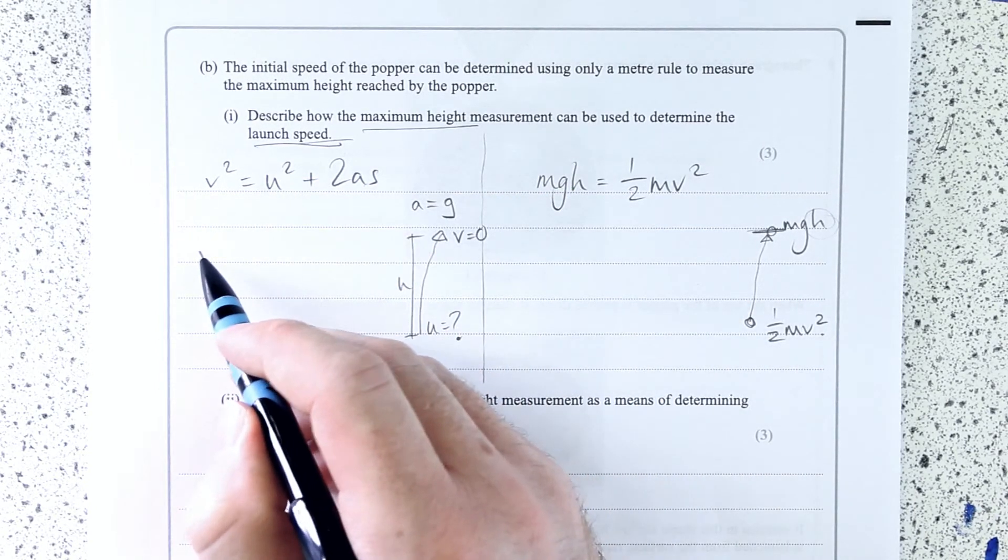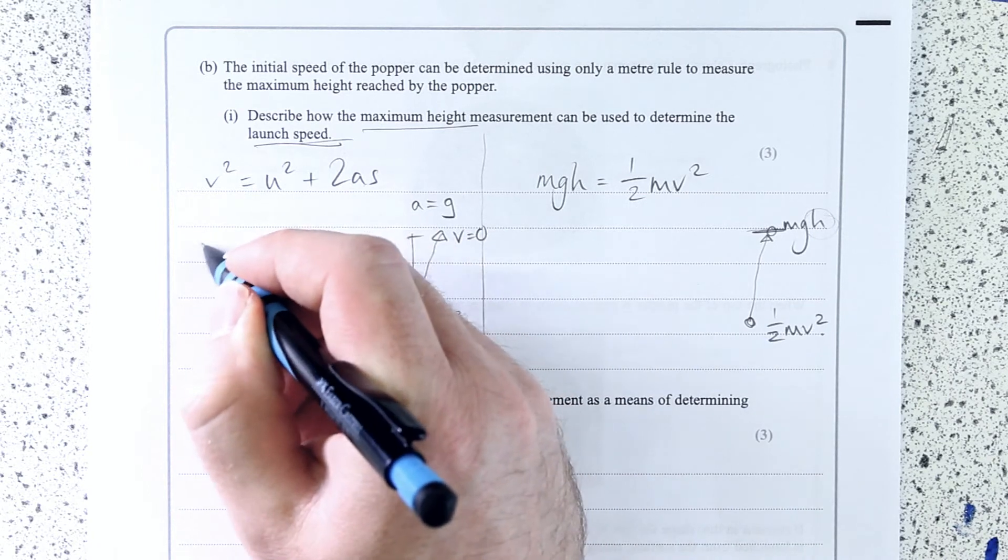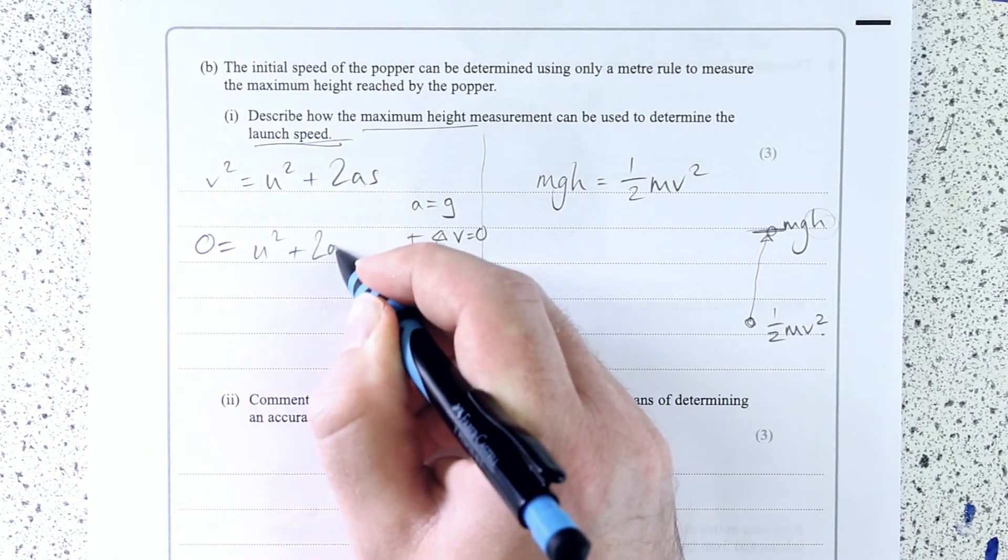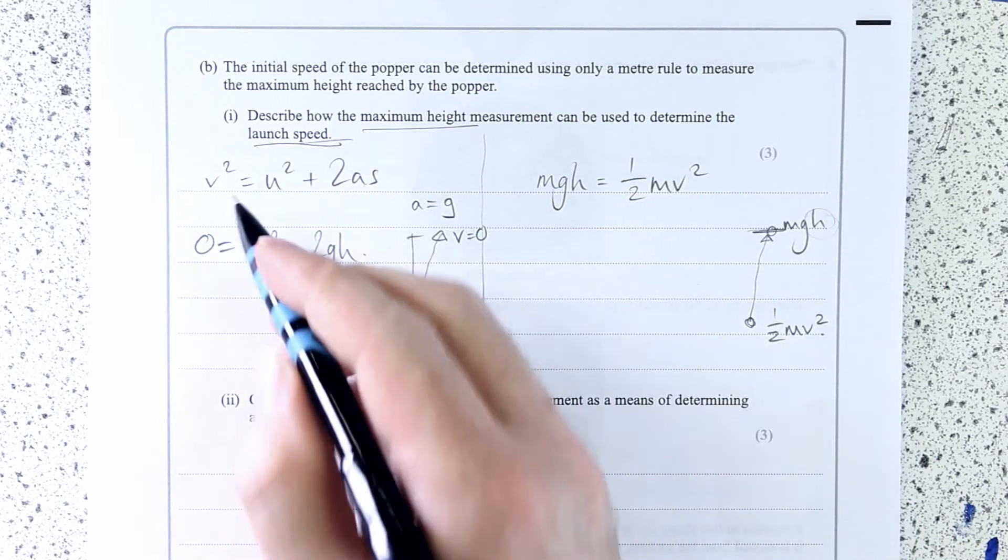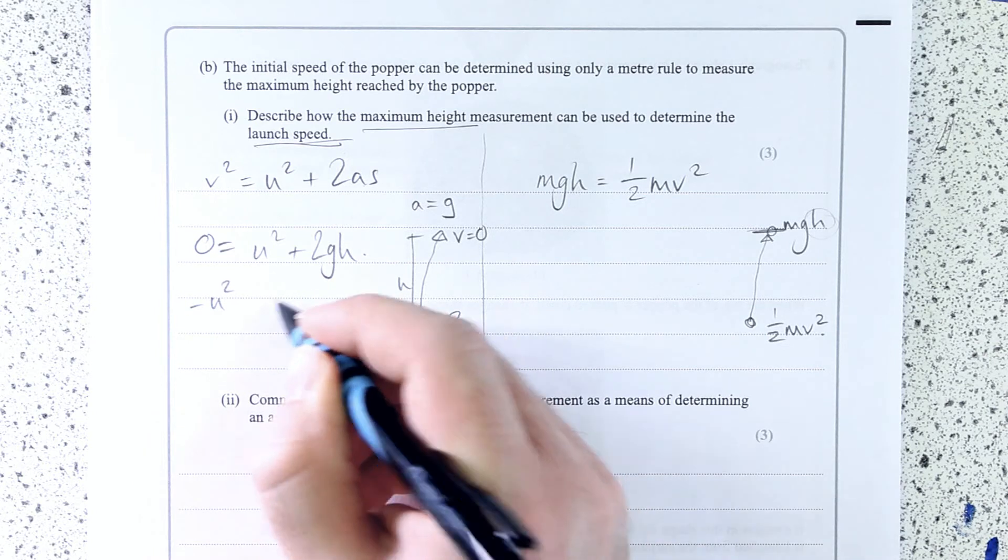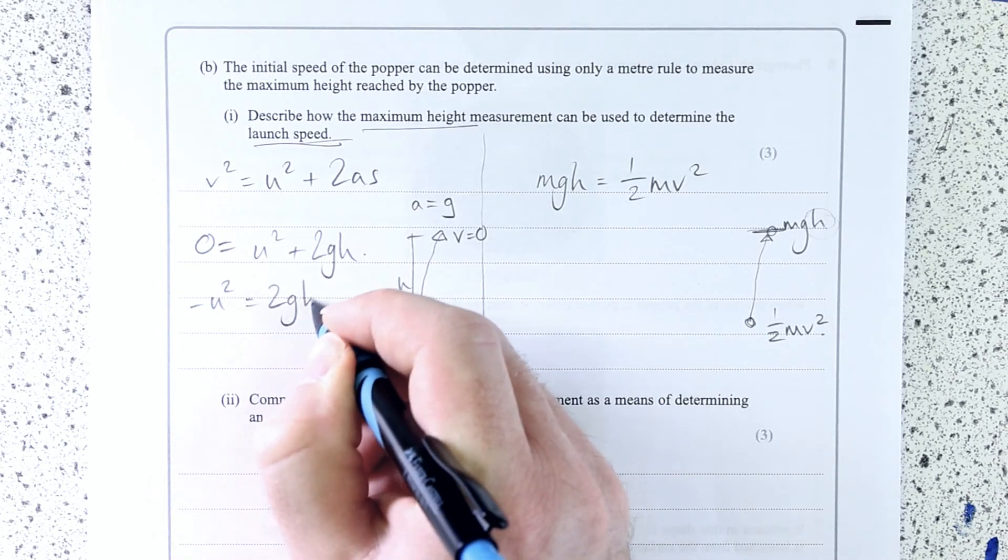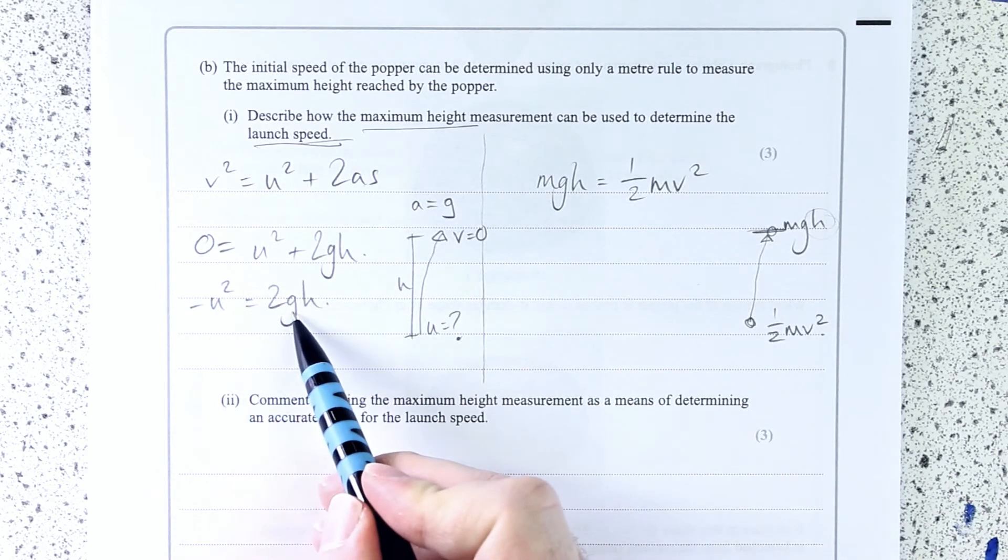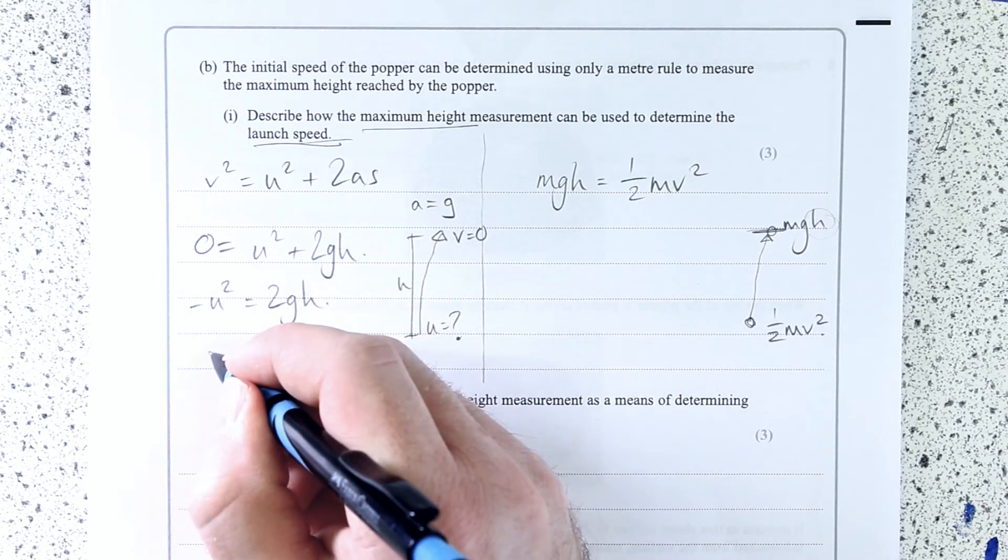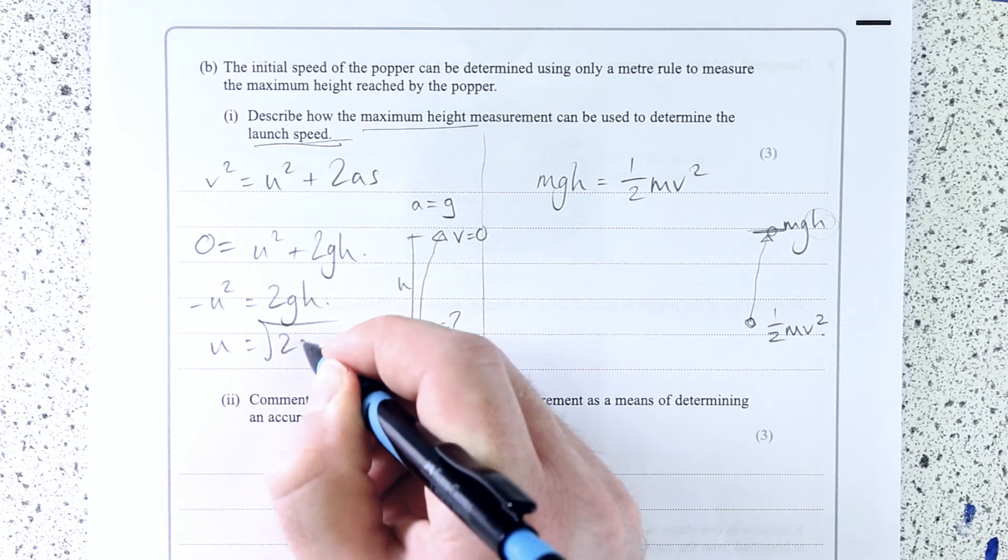So we can actually just put all those numbers in. Again, 0 equals U squared plus 2GH. Rearrange, minus U squared equals 2GH. We can actually, because G is negative, we can kind of ignore that. So we just get U is root 2GH.